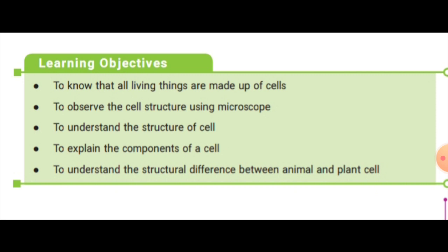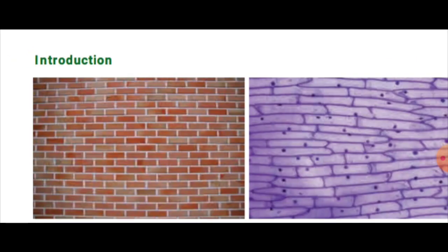In this lesson we will learn to observe the cell structure using a microscope, to understand the structure of the cell, to explain the components of the cell, and to understand the structural difference between animal cells and plant cells. These are the main objectives of this lesson.